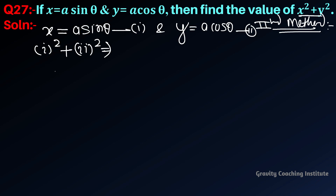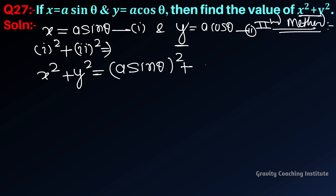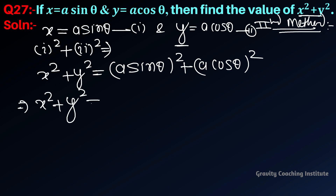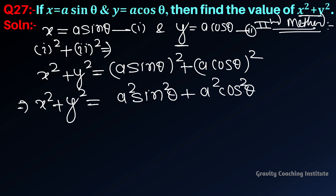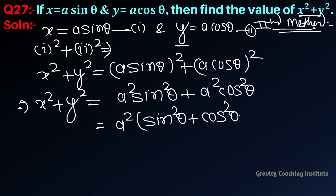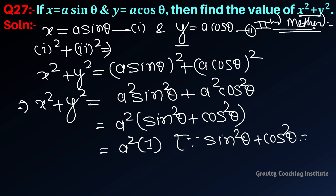So x square plus y square equals a sine theta whole square plus a cos theta whole square, which equals a square sine square theta plus a square cos square theta, equal to a square into one, since sine square theta plus cos square theta equals one. So the answer is a square.